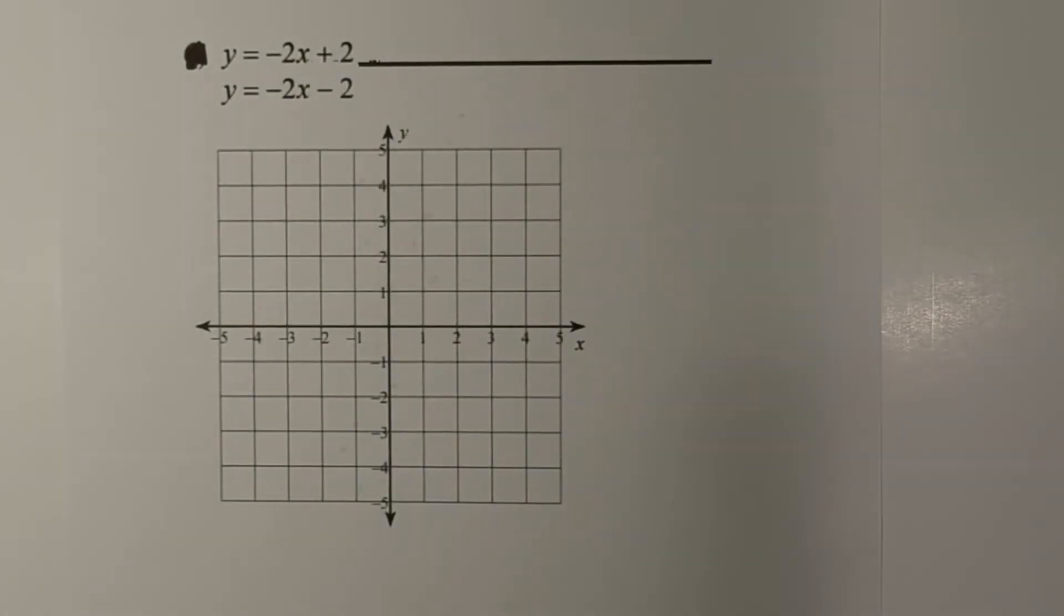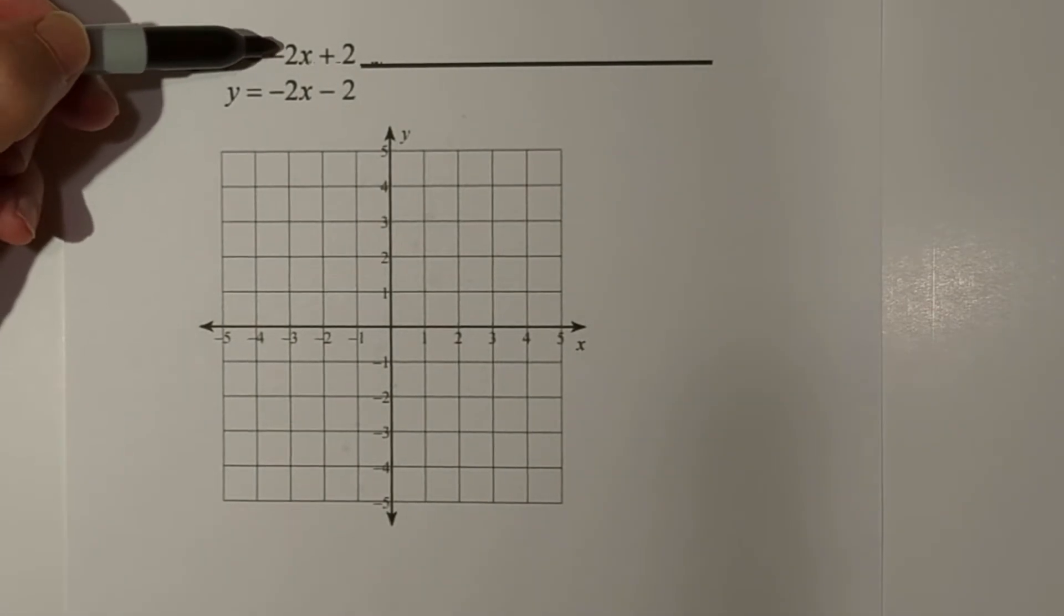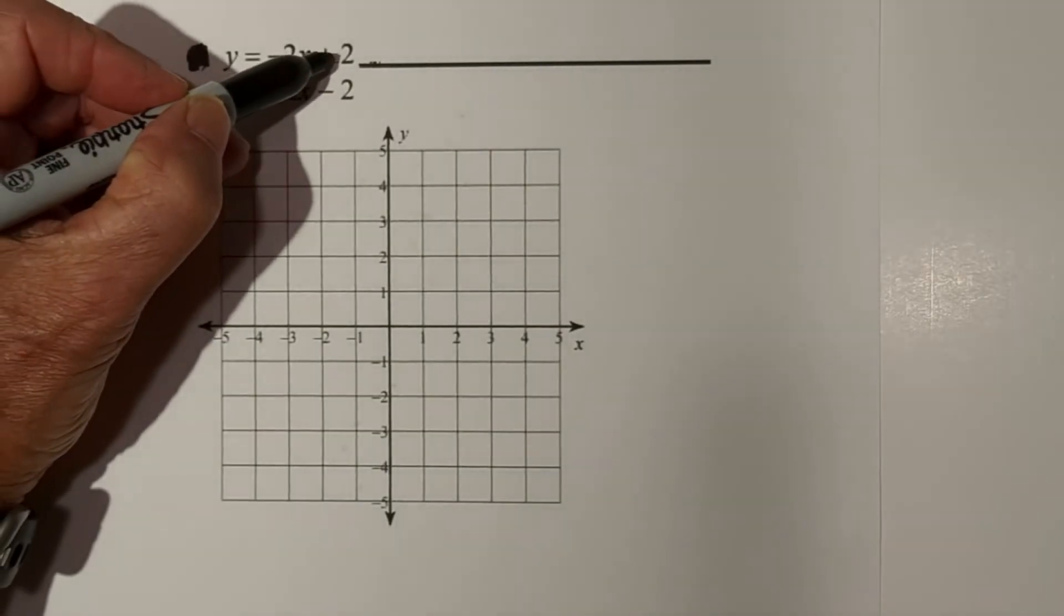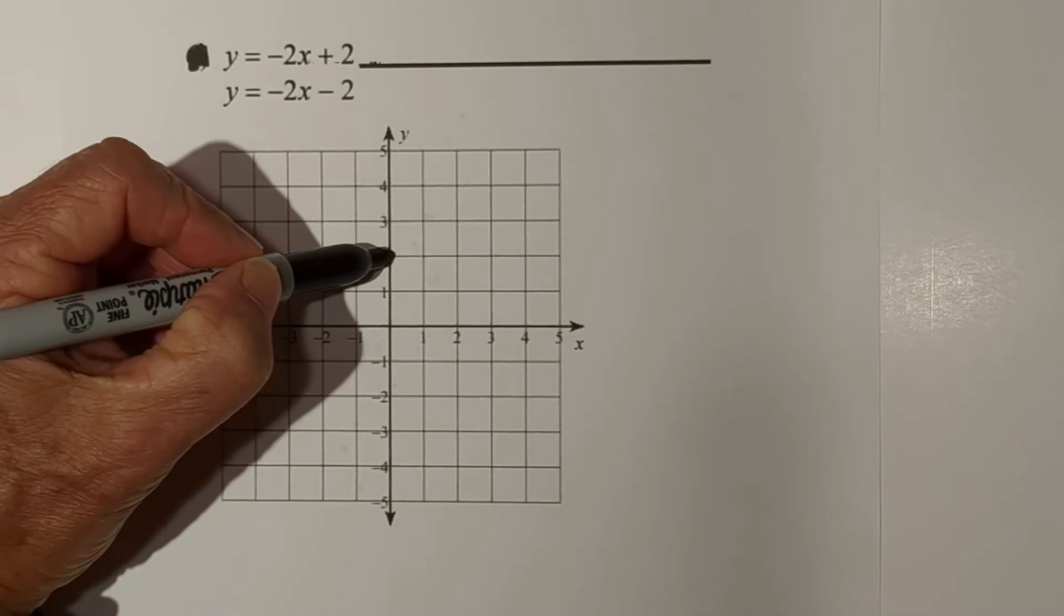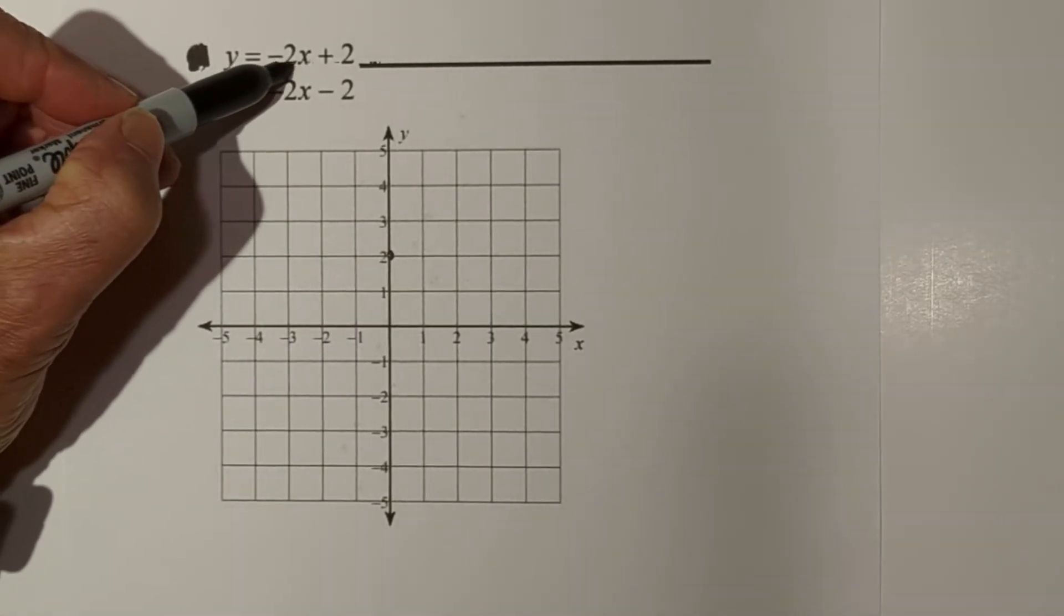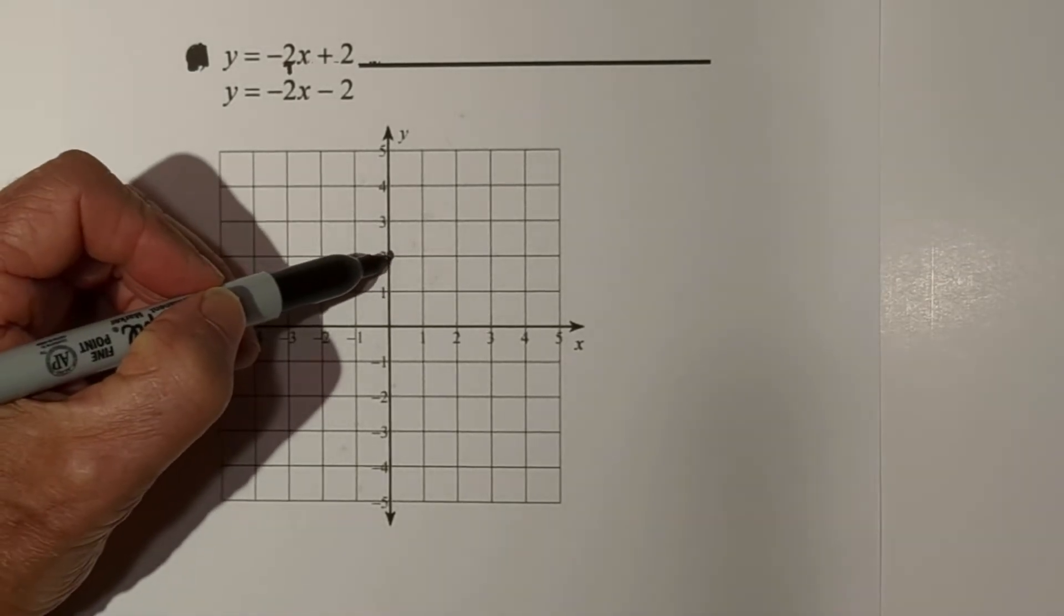Okay, let's take a look at this one. And one of the first things I notice is that they have the same slope. So let's graph them and kind of see what happens. Remember, you always begin at b, so we're going to begin at plus two. And this one, it has a negative slope. Remember, if you'd like, you can put it over one. So we're going to go down two and to the right one.